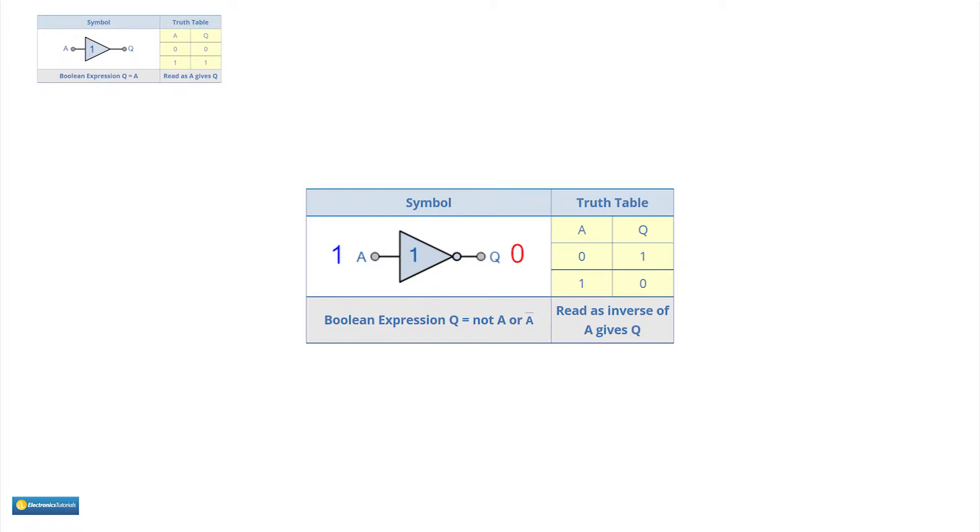The only difference in the symbol is a circle on the output. The circle means invert. It can be seen as a not circle, the output is not the input. You will often see a circle like this in diagrams meaning not or invert.